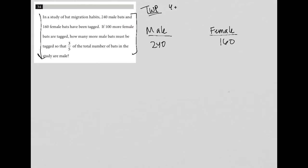Then it says, if 100 more female bats are tagged, so I'm going to add 100, getting me to 260. How many more bats must be tagged, how many more male bats? So I don't know how many more for the male, so add x, it becomes 240 plus x.